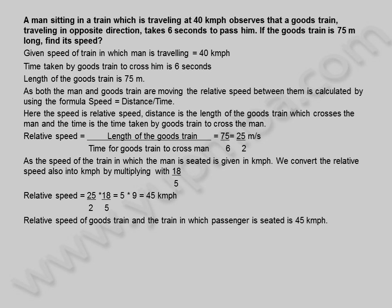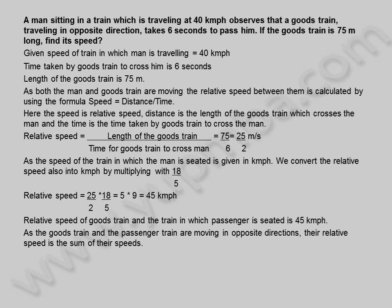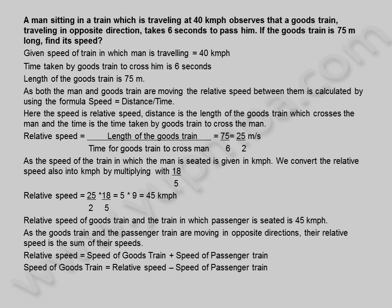Relative speed of goods train and the train in which passenger is seated is 45 kilometers per hour. As the goods train and the passenger train are moving in opposite directions, their relative speed is the sum of their speeds. Relative speed is equal to speed of goods train plus speed of passenger train. Speed of goods train is equal to relative speed minus speed of passenger train, which is 45 kilometers per hour minus 40 kilometers per hour.